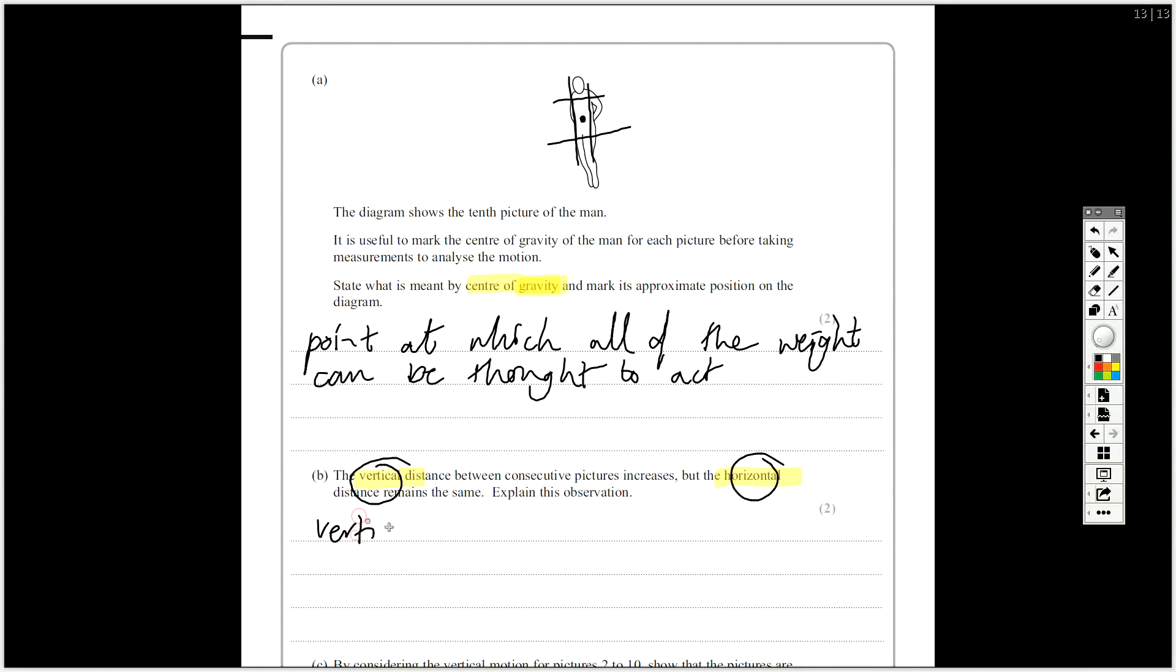So for vertical, he's accelerating under gravity. But in the horizontal, there is no acceleration. So of course, I hope you realise the time between each photo stays the same. So if the vertical distance increases for the same time, it means it's speeding up.